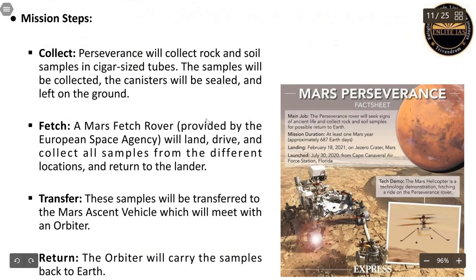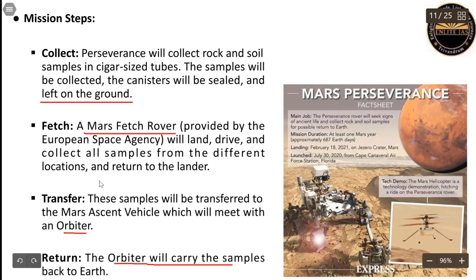The steps in the mission were: first, collect samples of rocks and soil, seal them, and leave them on the ground; then fetch them with the Mars Fetch Rover; next, transfer them with the Mars Ascent Vehicle, which will meet the orbiter; and finally, the orbiter will carry these samples back to Earth.